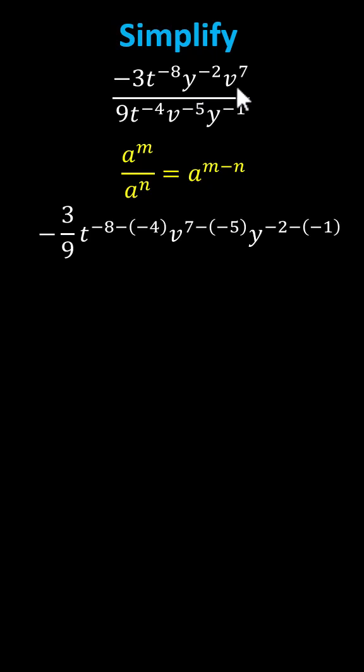Next, notice the y's and v's are not lined up. We have v to the power of the difference of seven and negative five, and y to the power of the difference of negative two and negative one.